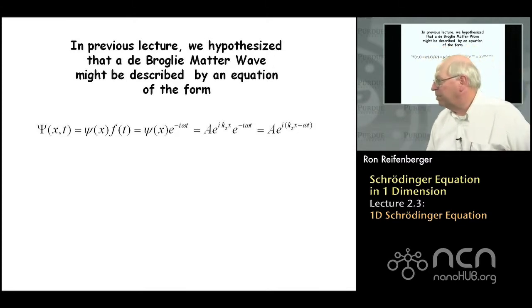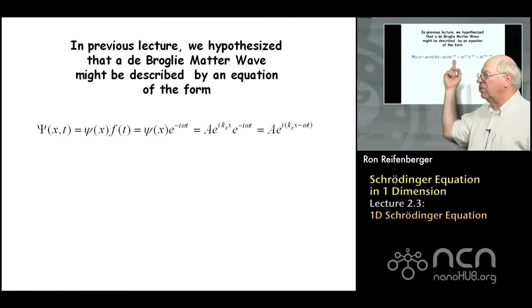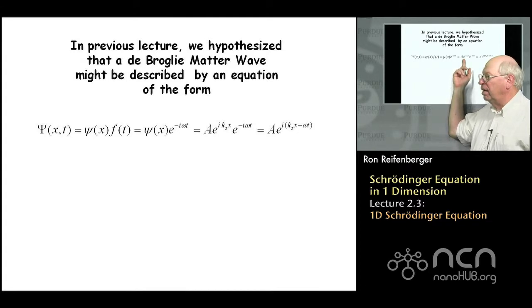Schrodinger then hypothesized that these two functions could be represented by exponentials. He represented the spatial part of the wave function in terms of e to the i K X, and he represented the time-dependent part of the wave function by e to the minus i omega T. A is the amplitude. It's a multiplicative coefficient that multiplies these two exponential functions.